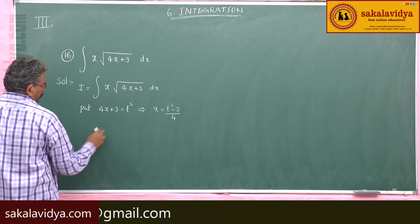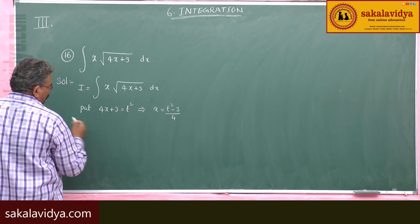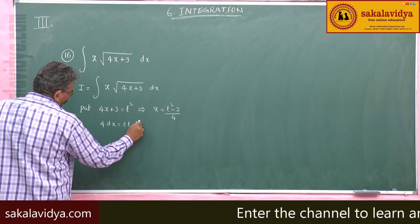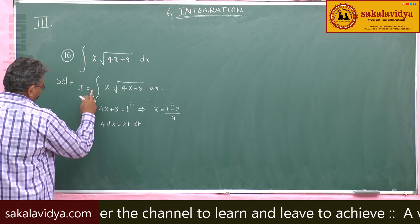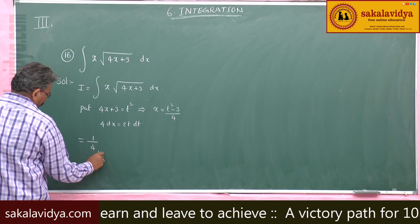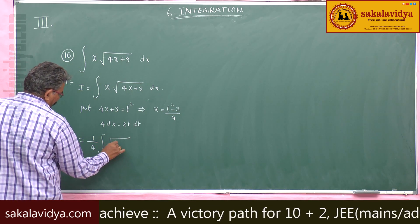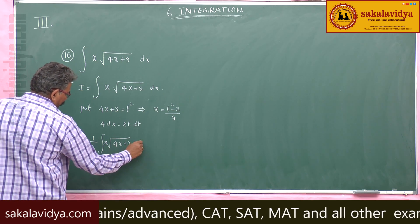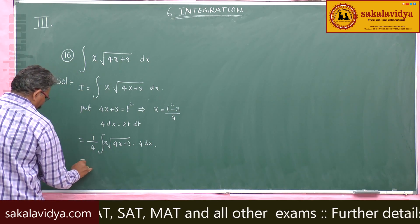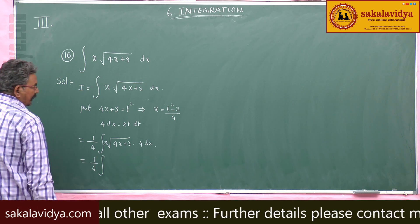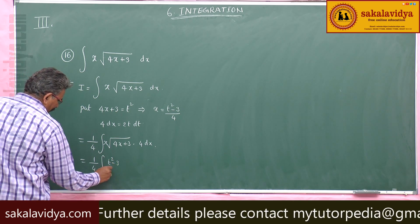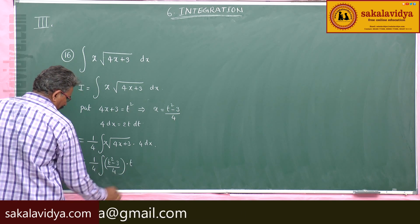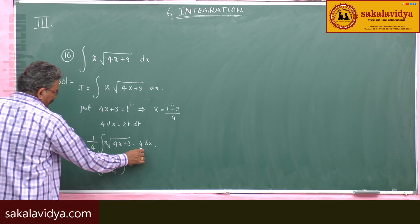Differentiating both sides: 4 dx equals 2t dt. Multiply and divide by 4 to get 1/4 integral of √(4x+3) · x · 4dx. Now substituting: x becomes (t² minus 3) by 4, √(4x+3) becomes t, and 4 dx becomes 2t dt.